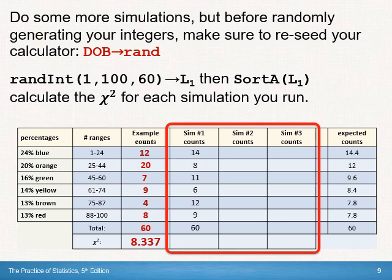So these are my numbers from my first simulation. And I got a chi squared statistic of 4.68. And then I did a second one. And I double checked again to make sure that I had 60 to make sure I didn't do any counting errors. And I got 6.3. And then I did a third one. And I got 9.26.